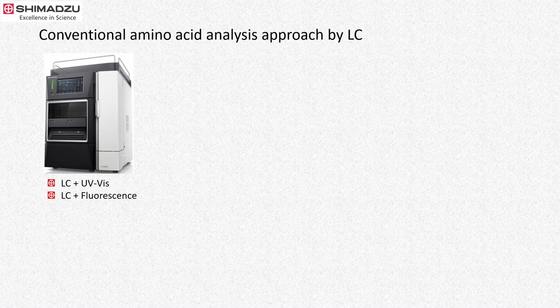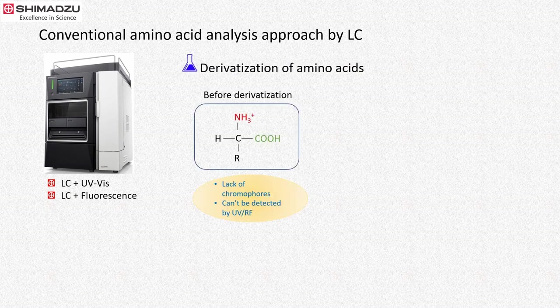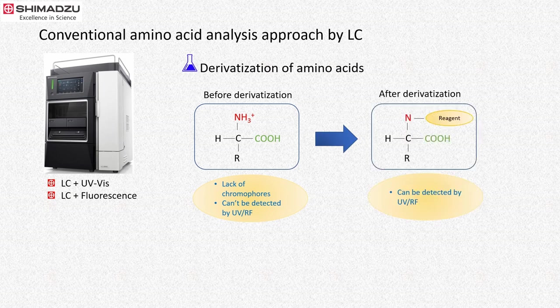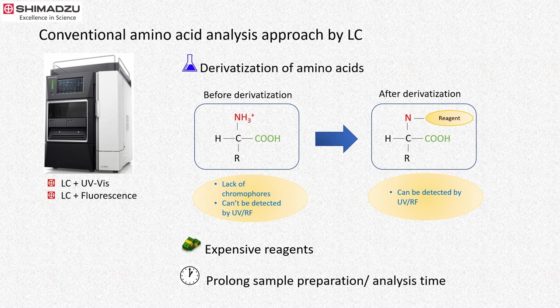Traditional and most widely used approach for amino acid analysis is by LC. This method often involves a derivatization step to improve the amino acid sensitivity for UV or fluorescence detection. This extra procedure requires expensive reagent and prolongs the sample preparation or analysis time.